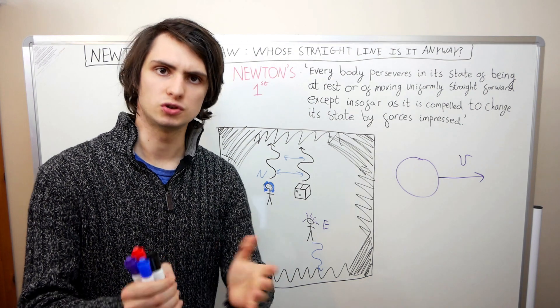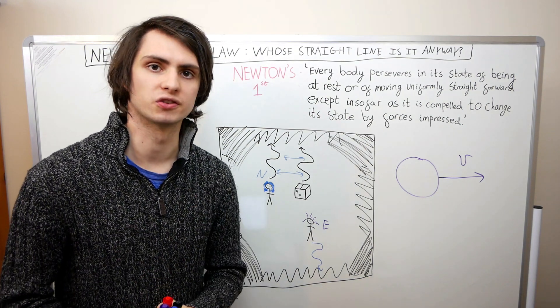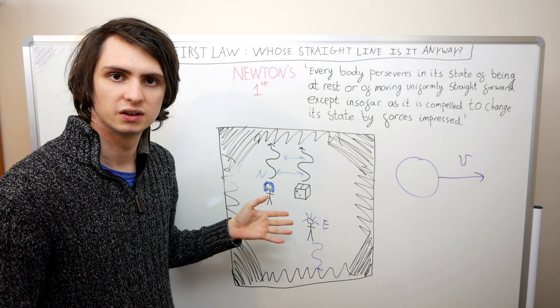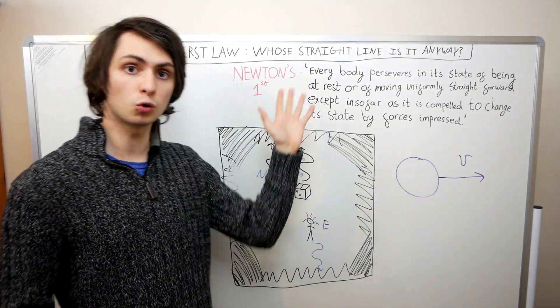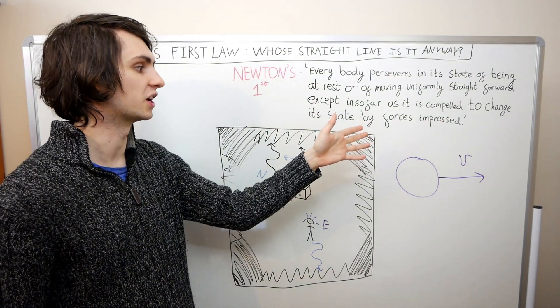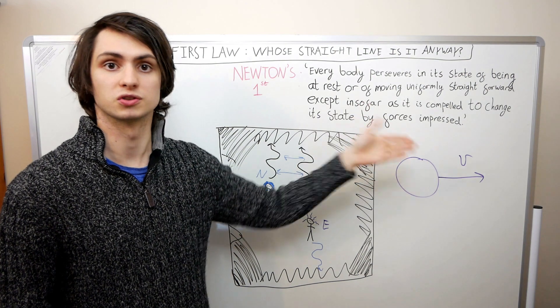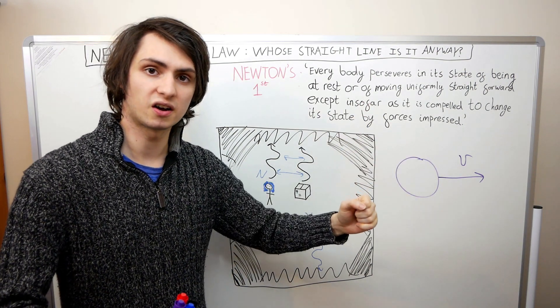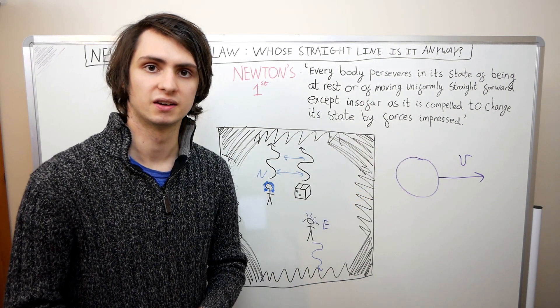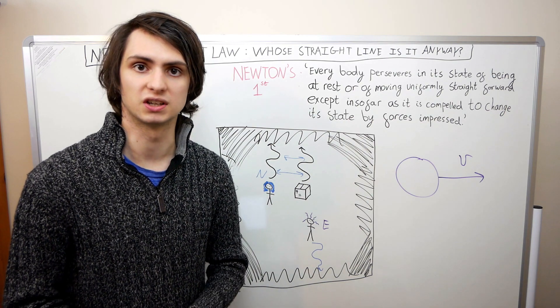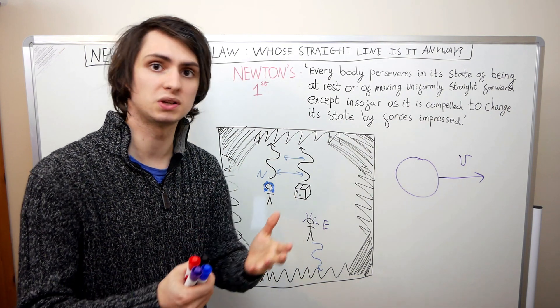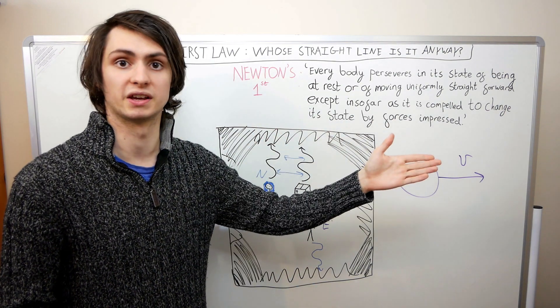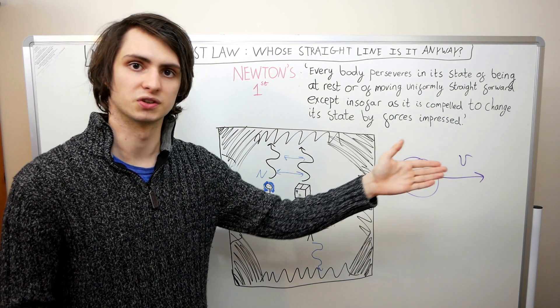If all we have is Newton's first law, then there's no way to answer the question, who's experiencing what force? What we learn from this is that it's all well and good to say that force-free objects move in straight lines with constant velocity. But we need to decide what counts as a straight line, and what counts as a constant velocity.